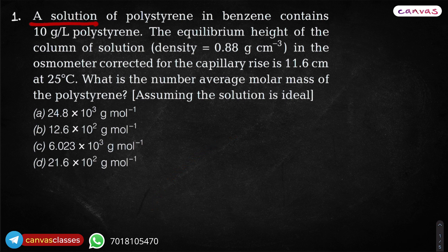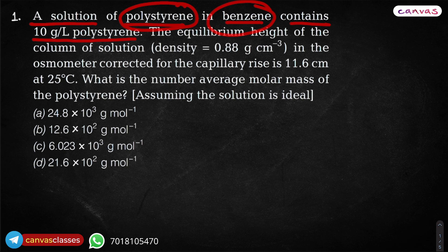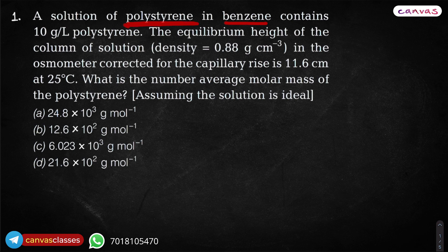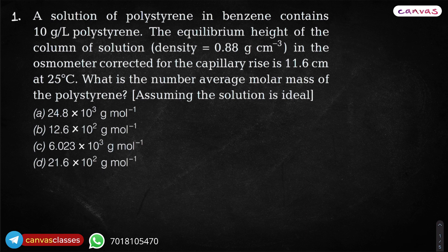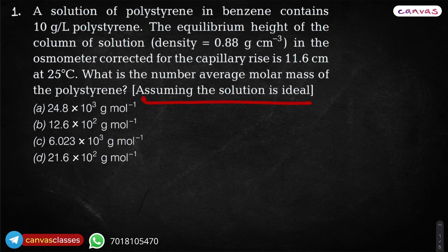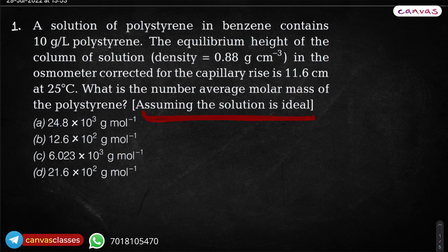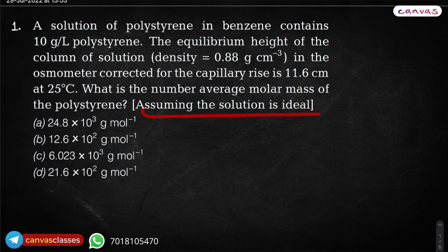Now, the first question: a solution of polystyrene in benzene contains 10 gram per liter polystyrene. So benzene is a solvent, polystyrene is a solute. Because polystyrene and benzene will dissolve easily, we can assume that maybe they are forming an ideal solution. But let's not assume that - they have already given it. That's great, because they have similar kind of intermolecular forces. That is why we can assume it is forming an ideal solution.